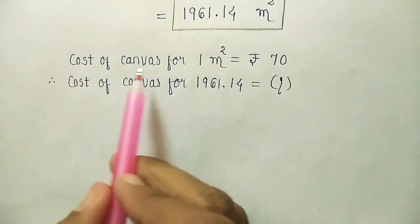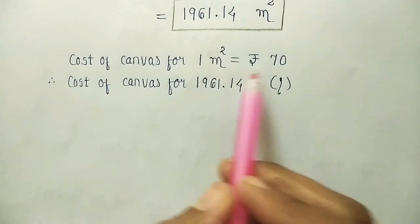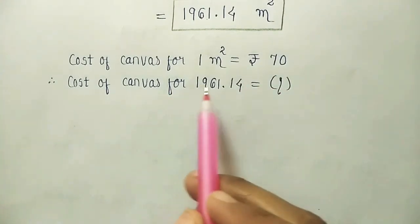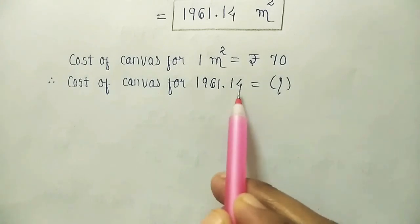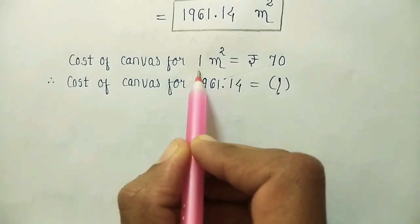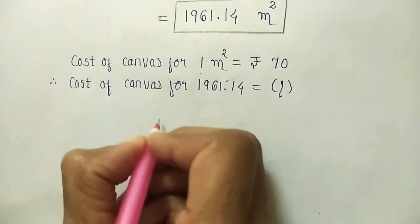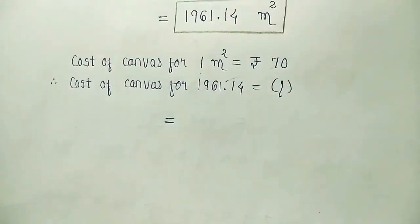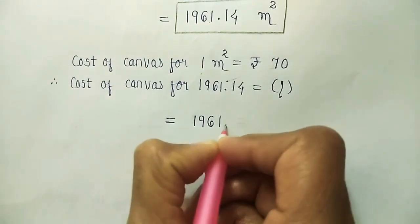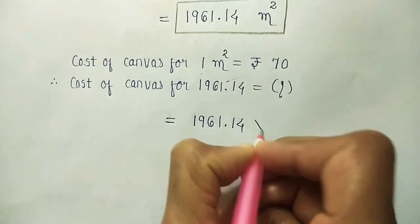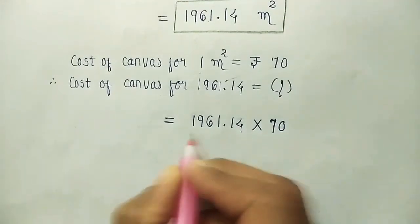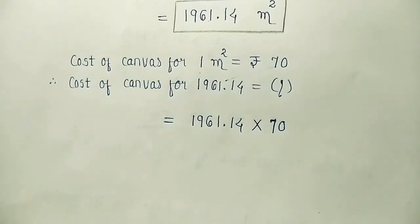So here it is cost of canvas for 1 meter square is equal to Rs 70. Therefore cost of canvas for 1961.14 meter square. How much? So what to do? Multiplication of this and denominator is 1. So as it is 1 in the denominator, we will not mention but we will write 1961.14 multiplied with 70. In the denominator we have 1. So we are not mentioning it.